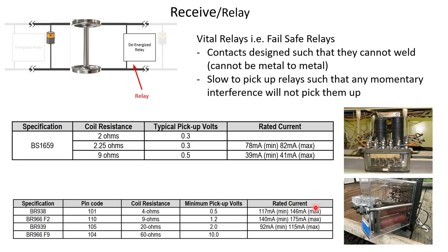The next component is the relay side. There have mainly been two types of vital relays used on track circuits: a shelf type relay and a plug-in type relay. When we say they are vital relays, it means they are designed so that there cannot be any unsafe failure — for example, the contacts are designed so that they won't weld.